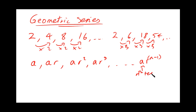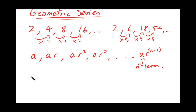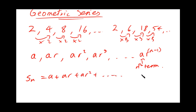So this is our formula for the nth term. Now let's look at the sum of a geometric series. SN equals A plus AR plus AR squared, all the way up to AR to the n minus 1.